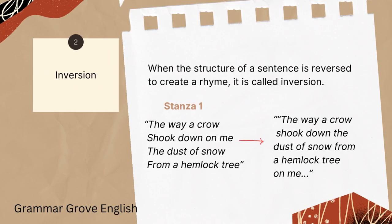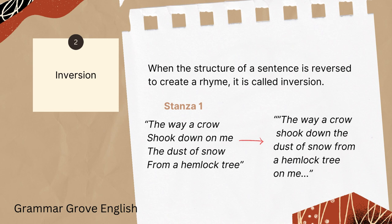Next we have inversion. When the structure of a sentence is changed by the poet to create rhyme, this is called inversion. Poets can use poetic license, which allows them to change the structure of a sentence or a poem in order to create a rhyming effect. They can also change the spelling of certain words. Here in stanza 1, we can see an example of inversion: 'The way a crow shook down on me the dust of snow from a hemlock tree.' The sentence structure has been altered. If said normally, it would go: 'The way a crow shook down the dust of snow from a hemlock tree on me.'